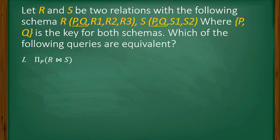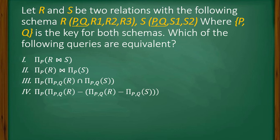Query 1 is projection of P from R natural join S. Query 2 is projection of P over R joined with projection of P over S. Query 3 is projection P over the intersection of projection PQ of R and projection PQ of S. Query 4 is projection P from projection PQ of R minus, in brackets, projection PQ of R minus projection PQ of S.